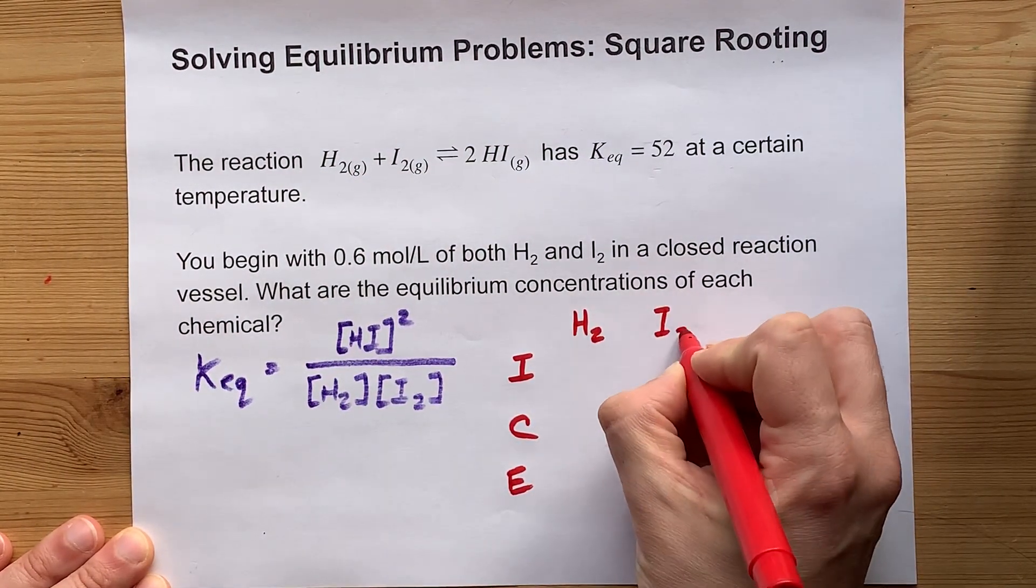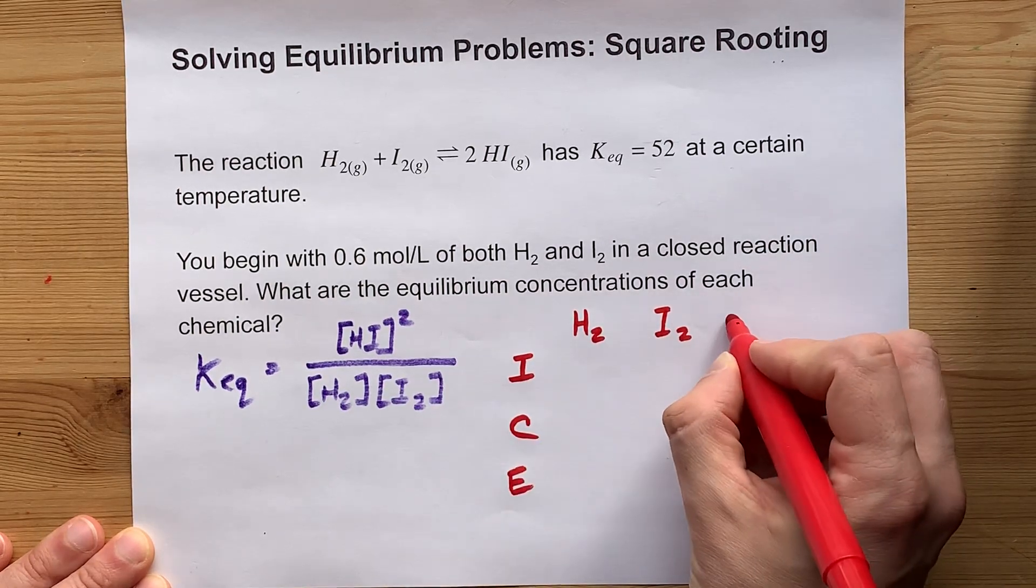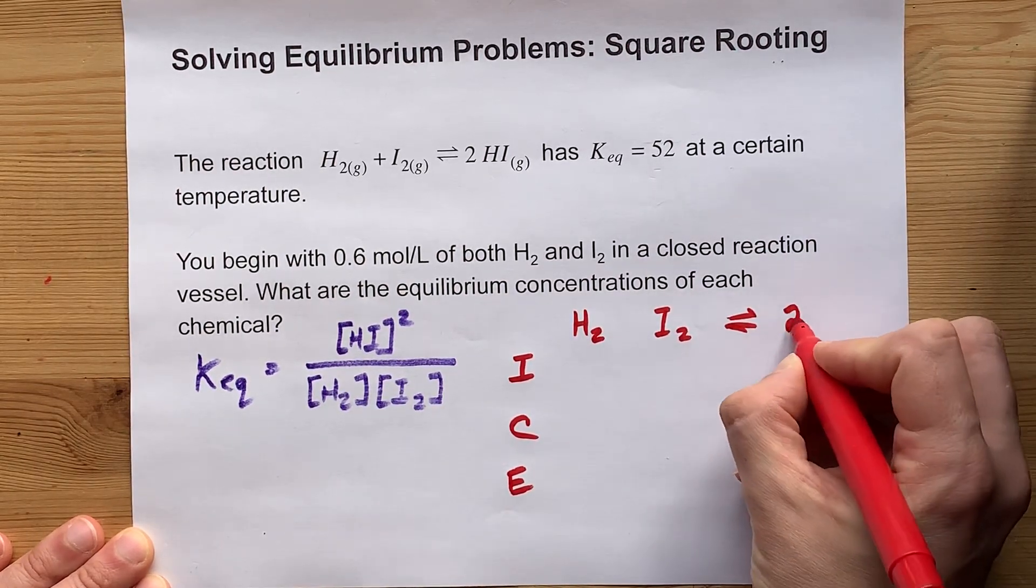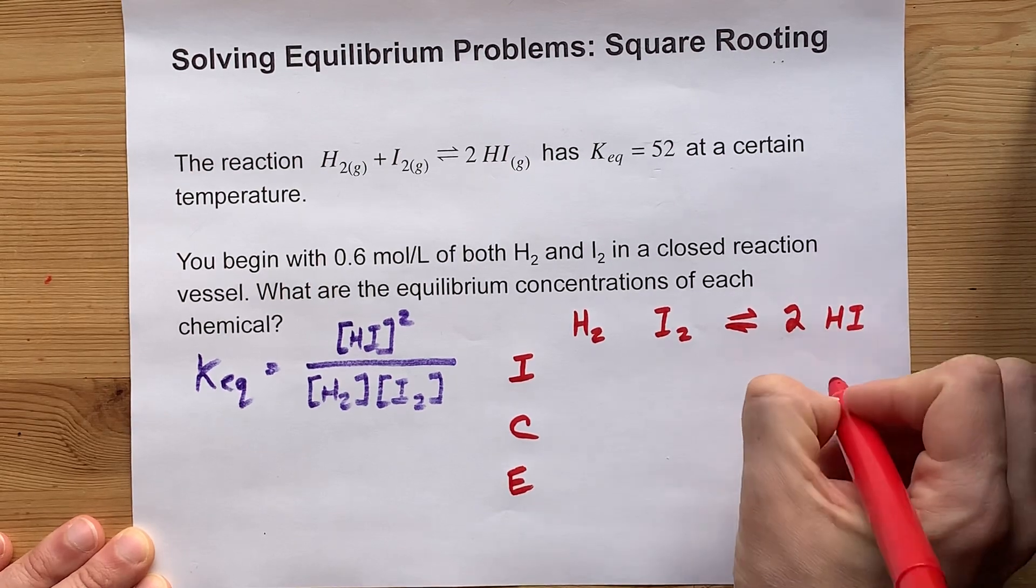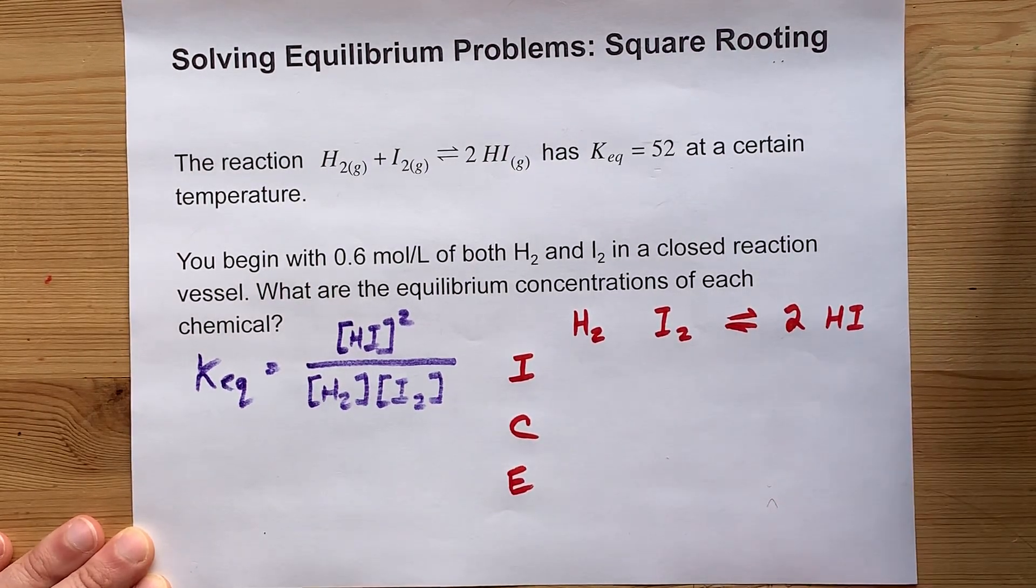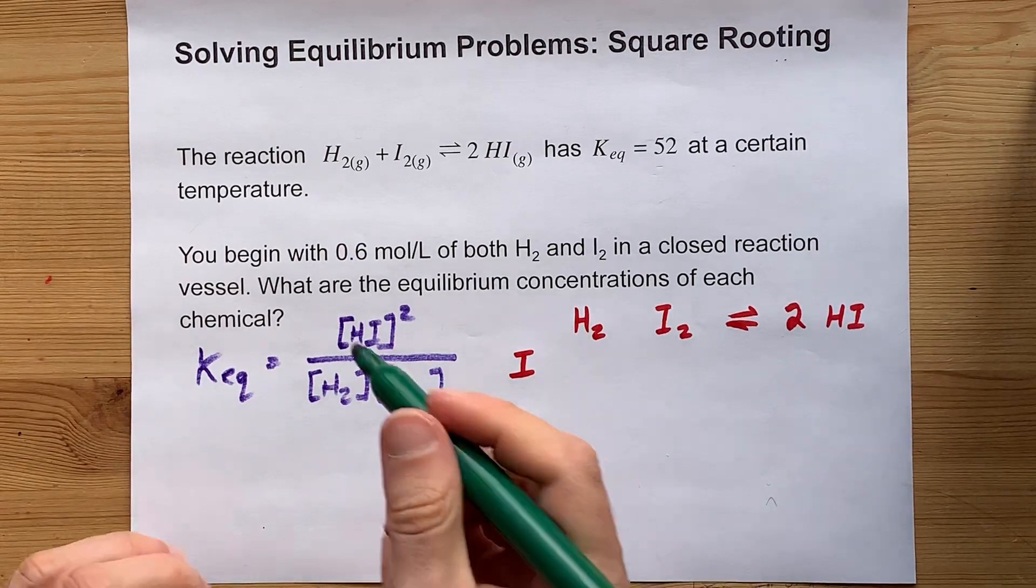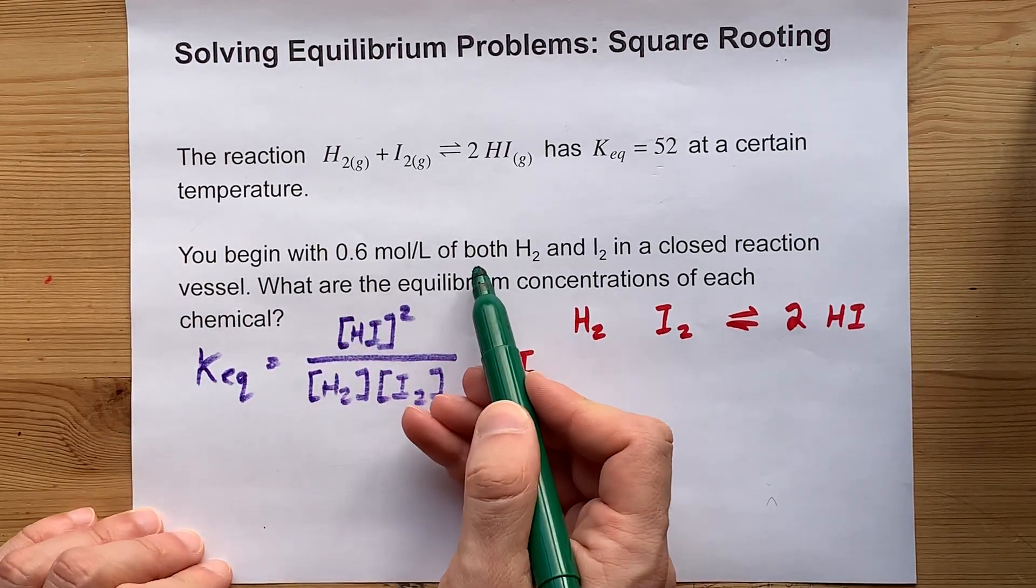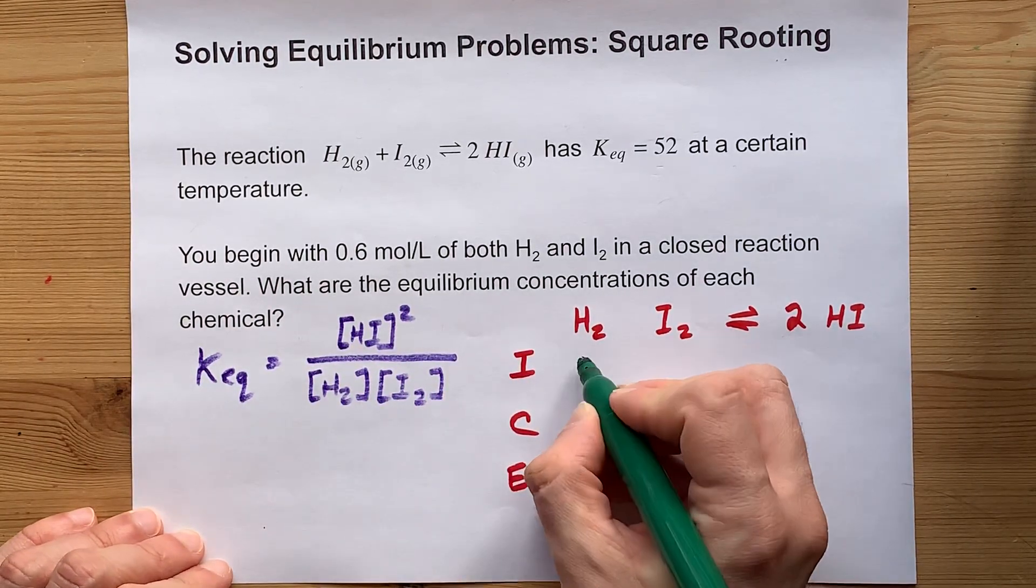But if you don't, you take the initial concentrations of each of the reactants, and you show it becoming a higher concentration than zero of products. Again, let me illustrate that. We're beginning with 0.6 moles per liter of both hydrogen and iodine.